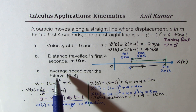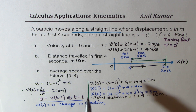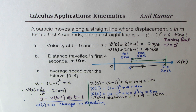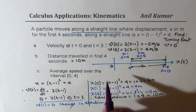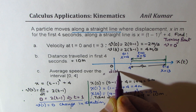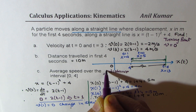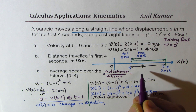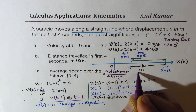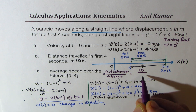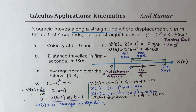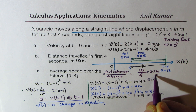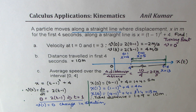Part C is average speed over the interval 0 to 4. Average speed is distance travelled over time taken — change in distance over change in time. Distance travelled is 10 meters and the time is 4 minus 0 equals 4 seconds, so we get 10 divided by 4, which is 2.5 meters per second.